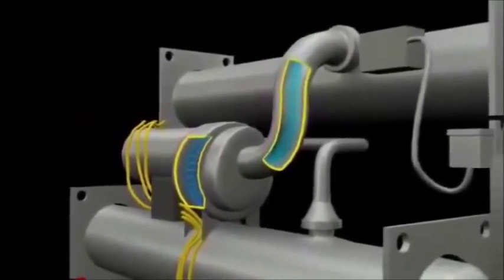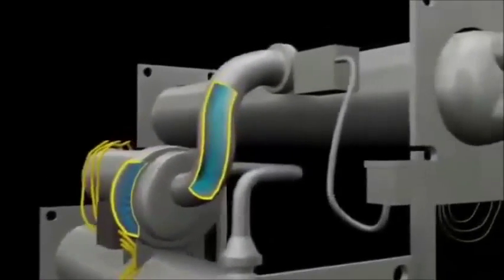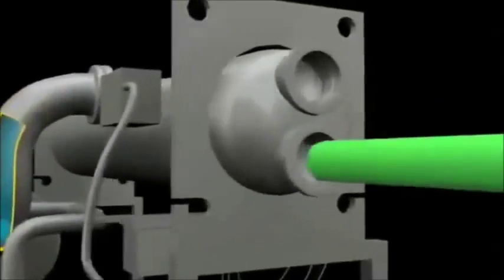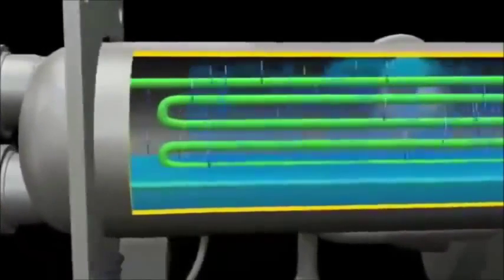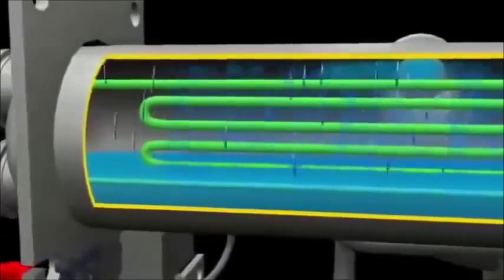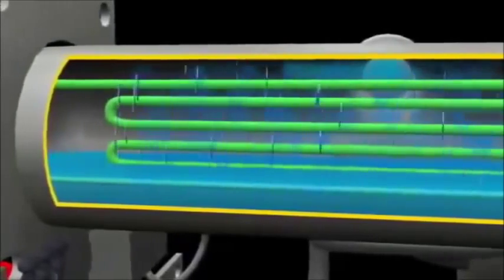After leaving the turbine, the vapor moves upward into the condenser tank. Here, cooling water enters the condenser from the cooling towers and circulates through coils in the condenser tank, cooling the vapor and allowing it to condense back into a fluid.